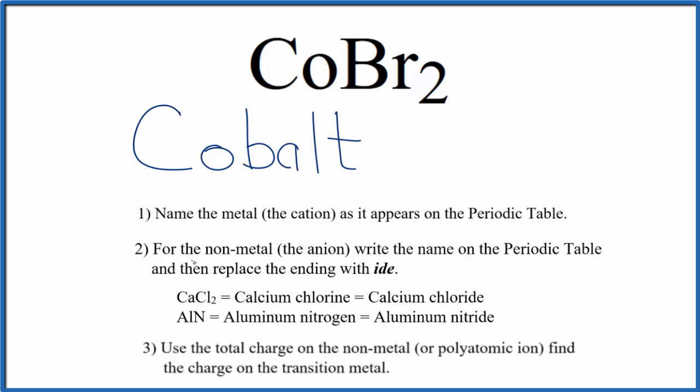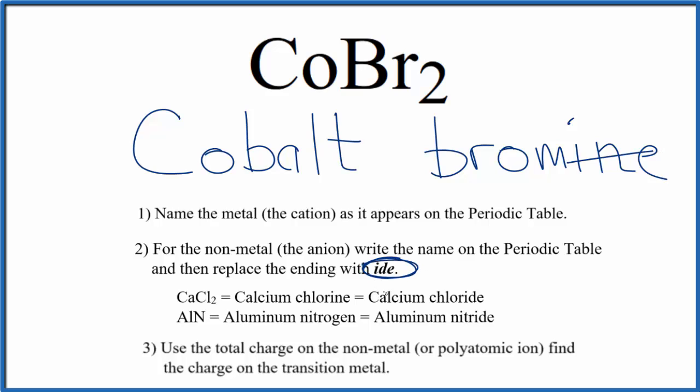Next, we're going to write the name for the non-metal as it appears on the periodic table, so Br, that's bromine. And then we're going to replace the ending, this I-N-E, with I-D-E. And so far, we have the name cobalt bromide for CoBr2.